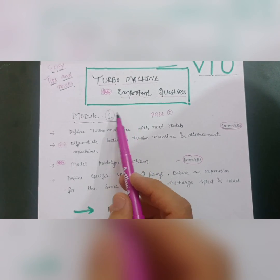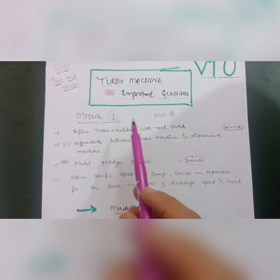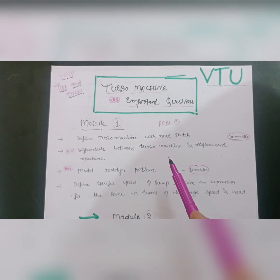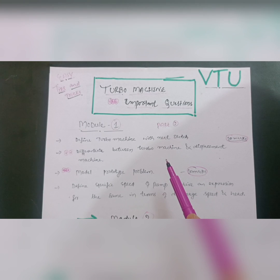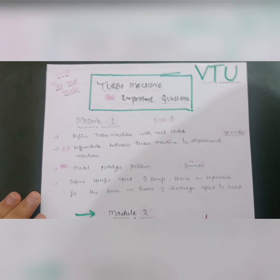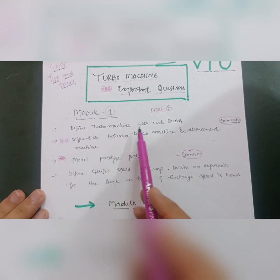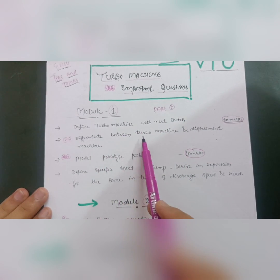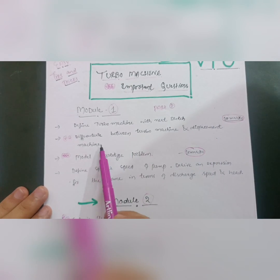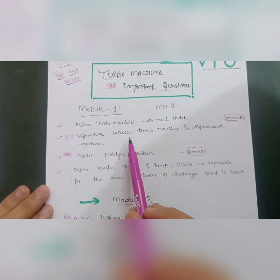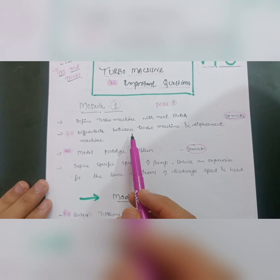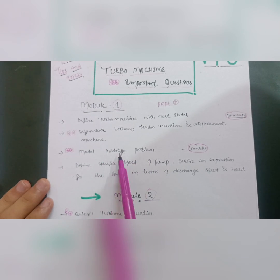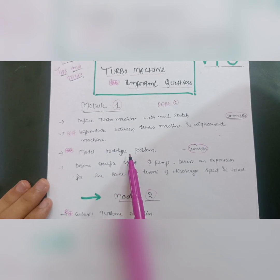Let me start with this strategy, module-wise. In Module 1, focus on these topics: first, define the turbo machine with a neat sketch; second, differentiate between turbo machine and displacement machine — this is one of the most important questions in the VTU examination, and you will definitely find it in previous year papers.